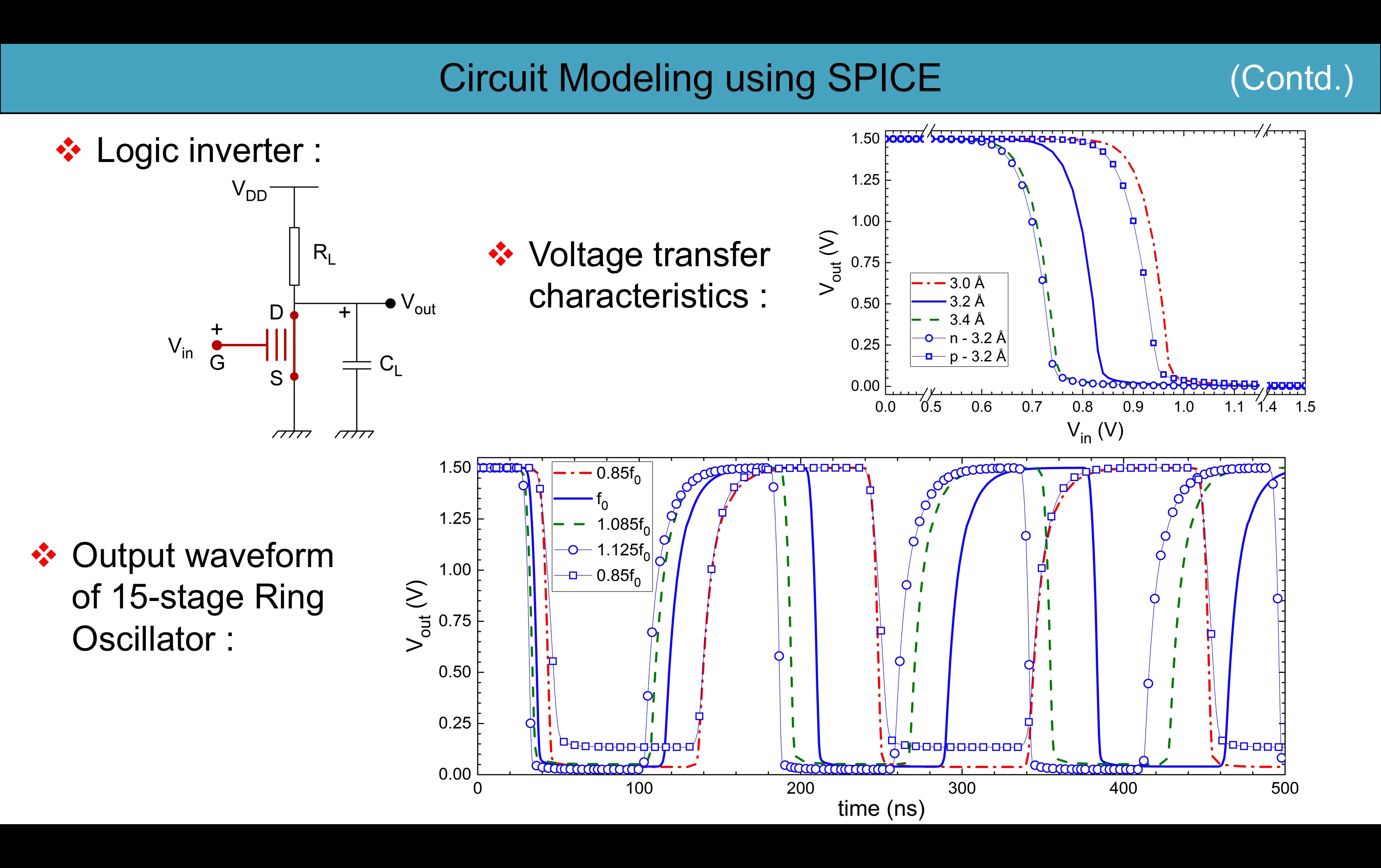Now this is the logic inverter circuit that we have made using SPICE and the voltage transfer characteristics of the logic inverter is shown. Here we can clearly see the threshold voltage shift due to the band gap opening in graphene. Using these logic inverters made out of those van der Waals heterostructure based MISFETs, we have developed 15 stage ring oscillator circuits and its output waveform is shown in the figure.